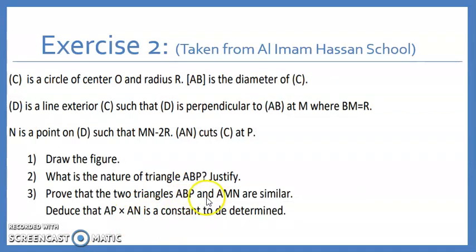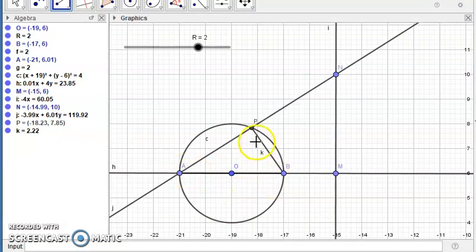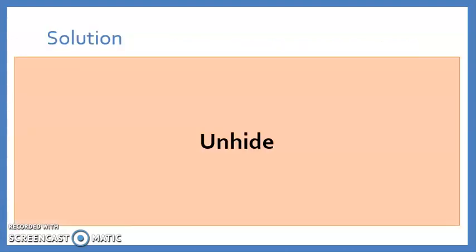Now prove that the two triangles ABP and AMN are similar and deduce that AP times AN is a constant to be determined. Let's look at the two triangles ABP and AMN. ABP, this triangle, and AMN. Try to do it by yourself. Pause the video and solve it. If you didn't know how, so first, A is a common angle in both triangles. Notice that angle PAB and NAM is a common angle. So now we're done with the first angle. What about the second angle? So we still have this angle or this angle and these two angles in the other triangle. Notice that APB is equal to 90 degrees. We proved it. And AMN is also equal to 90 degrees because this is perpendicular by given. So these two angles are equal and we're done by angle-angle method. So these two triangles are similar. This is the solution.